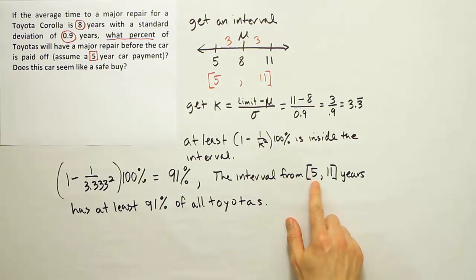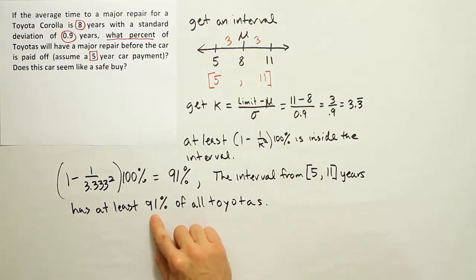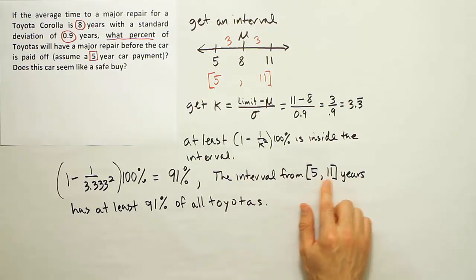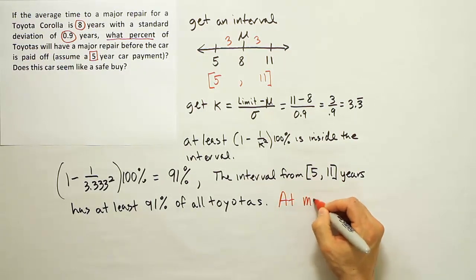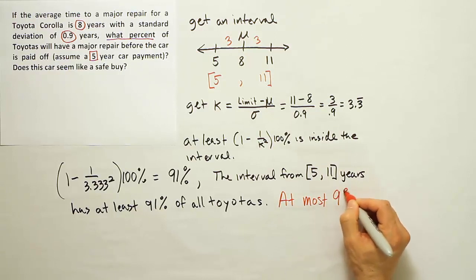We're asked to say what percent will fail or have a major repair before 5 years. So, again, we have to look at this interval and say, well, gee, if 91% at minimum is located inside of that interval, so it's at least 91%, it could be more, but it's no less than 91% is inside the interval, what could possibly be below or outside of the interval, or below 5 in this case? Well, the most that could be outside of the interval is 9%. So we should say at most 9%.